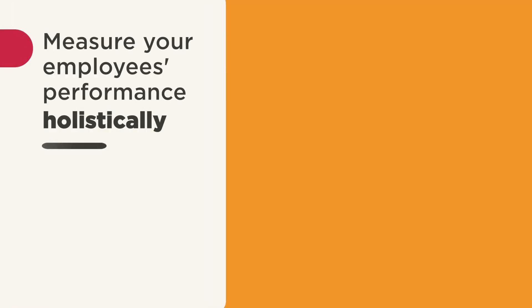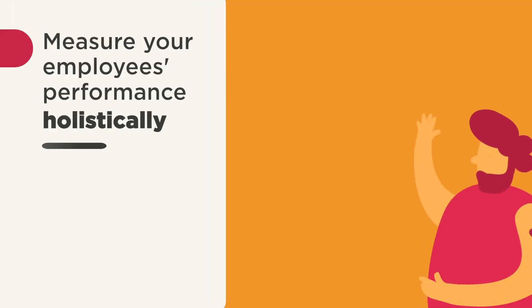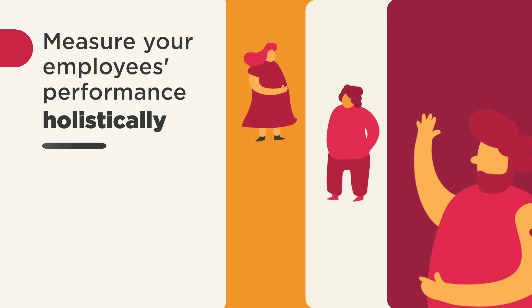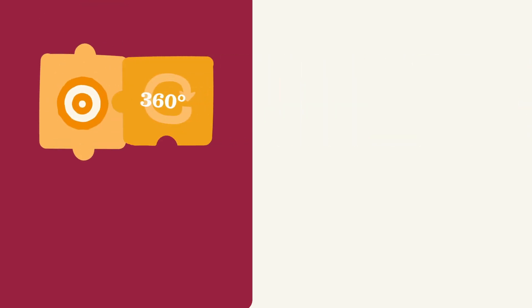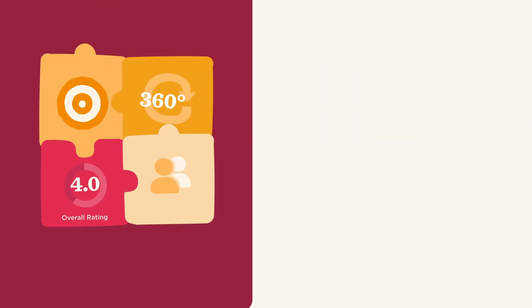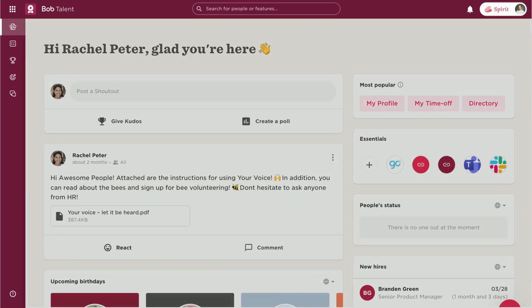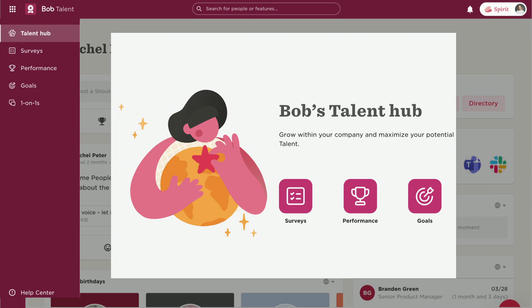Overall Performance Rating helps you measure your employee's performance holistically, taking multiple perspectives into account. It's meant to serve as an additional piece of the puzzle for viewing the employee's performance, by combining the ratings and averaging them into a final score. And it's part of our Awesome Talent module.